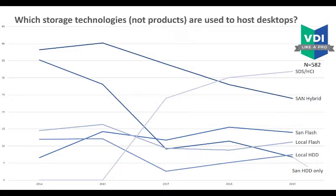Asking what kind of storage technology — not vendor, but technology — are you using: it's interesting to see that SAN is declining, while hybrids, all-flash, and even local storage including spinning drives — which surprised me — along with local flash, software-defined storage, and hyperconverged scale-out storage fabrics are all increasing rapidly. That's really helpful in solving this 'year of VDI' challenge.